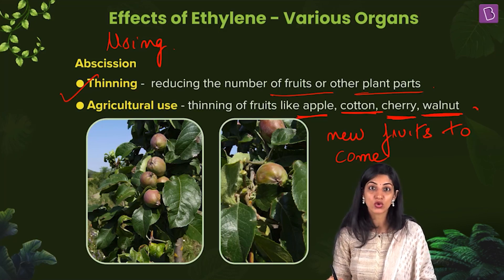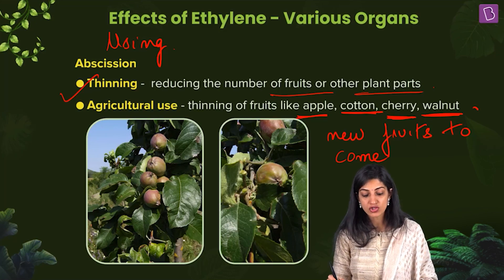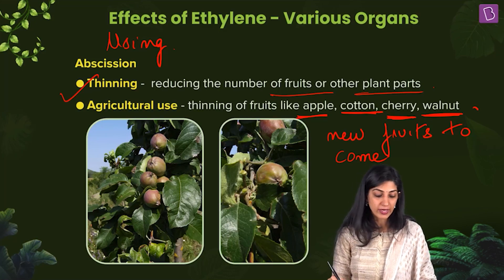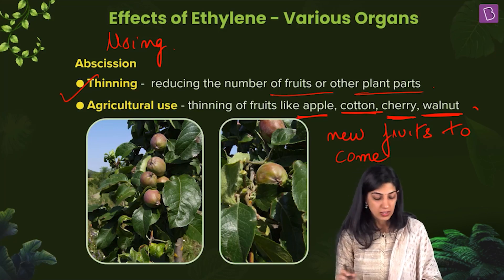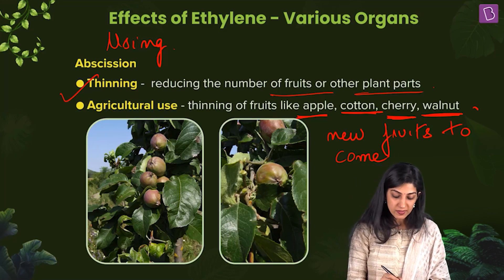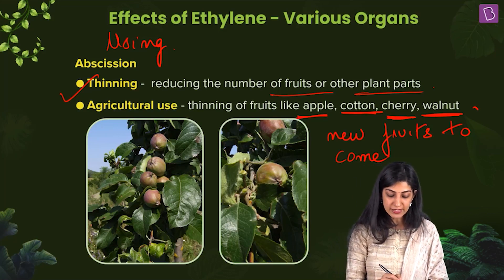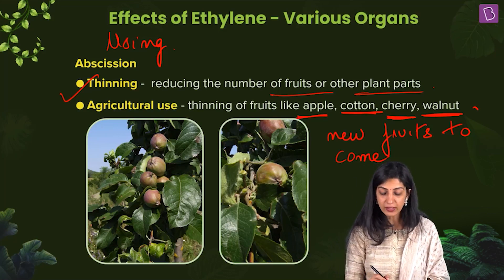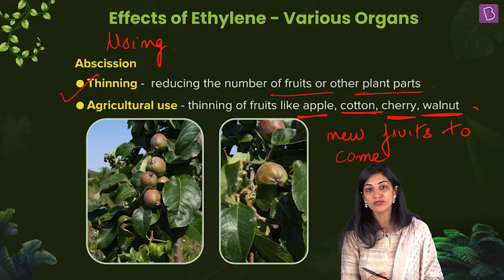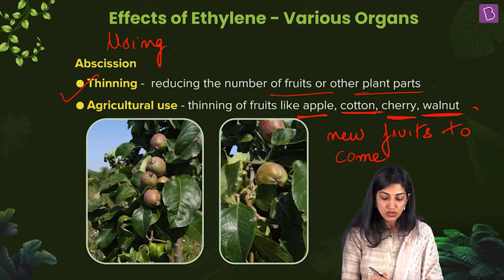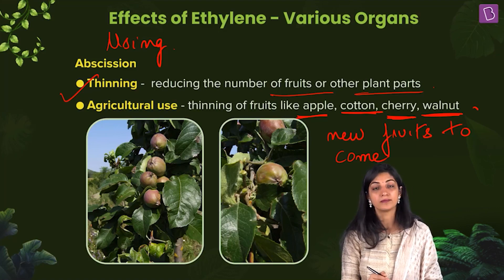Cotton is so useful commercially. In the figure, you can see clearly that before thinning, smaller apples are present. But after thinning, the apples get more space and don't have to compete for resources, so we see a slightly bigger apple.